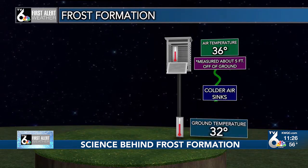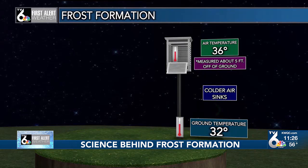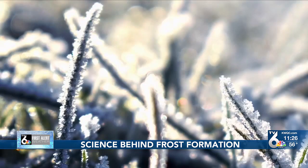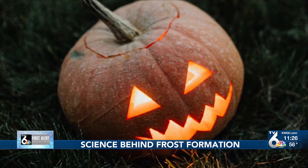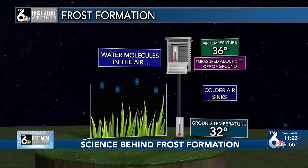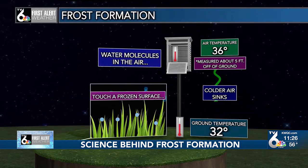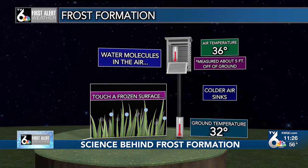If there is enough moisture present in the air, water molecules will touch the surface — such as grass or the pumpkin on your front porch — and freeze on contact, forming ice crystals, or as we know it, frost.